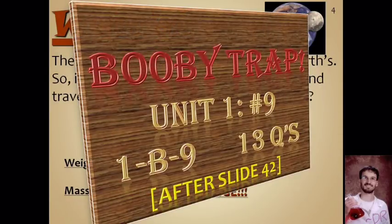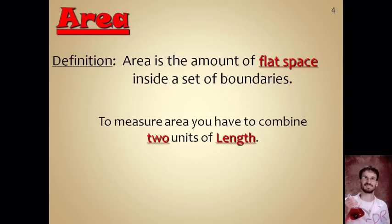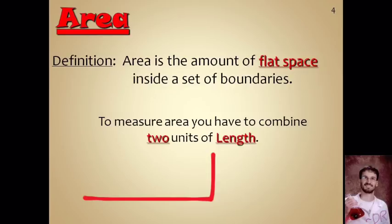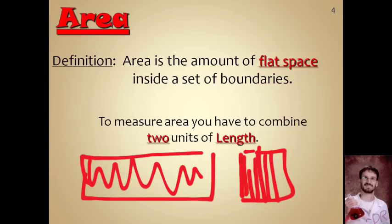That leads us to the second booby trap — 13 questions. Area is the amount of flat space — think of it as floor space in a room. To measure area, you measure two units of length: the length and the width. If you multiply them together, you get the area, because you're taking the length and repeating it across the width.